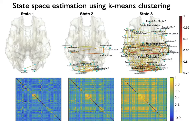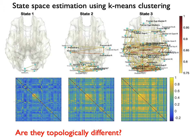The dynamically changing correlation matrices are then fed into k-means clustering to estimate the state space. We use the elbow method to automatically determine the number of clusters. Here we have State 1, State 2, and State 3. The question is whether they are topologically different.